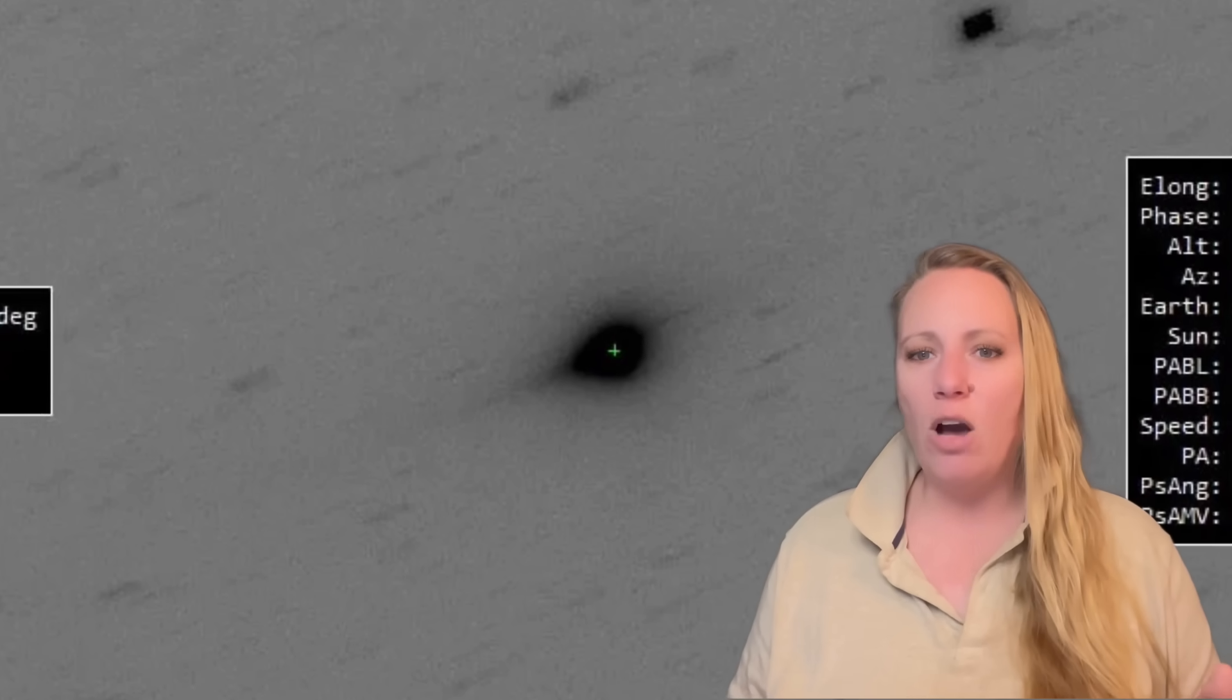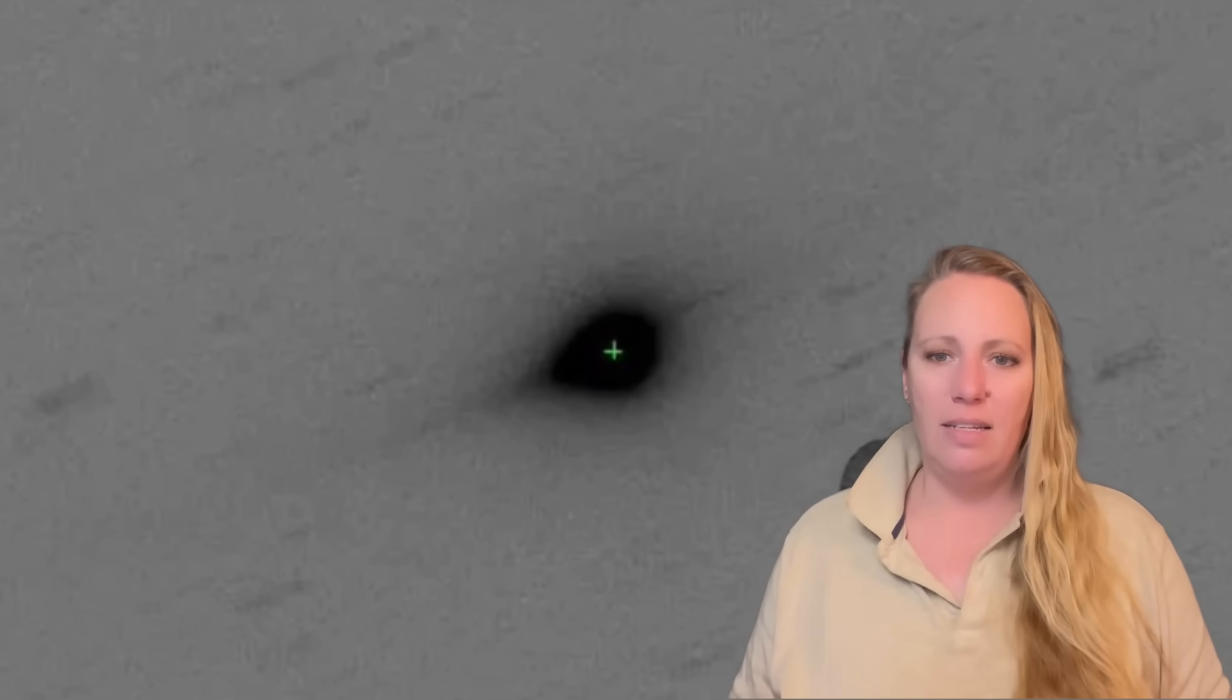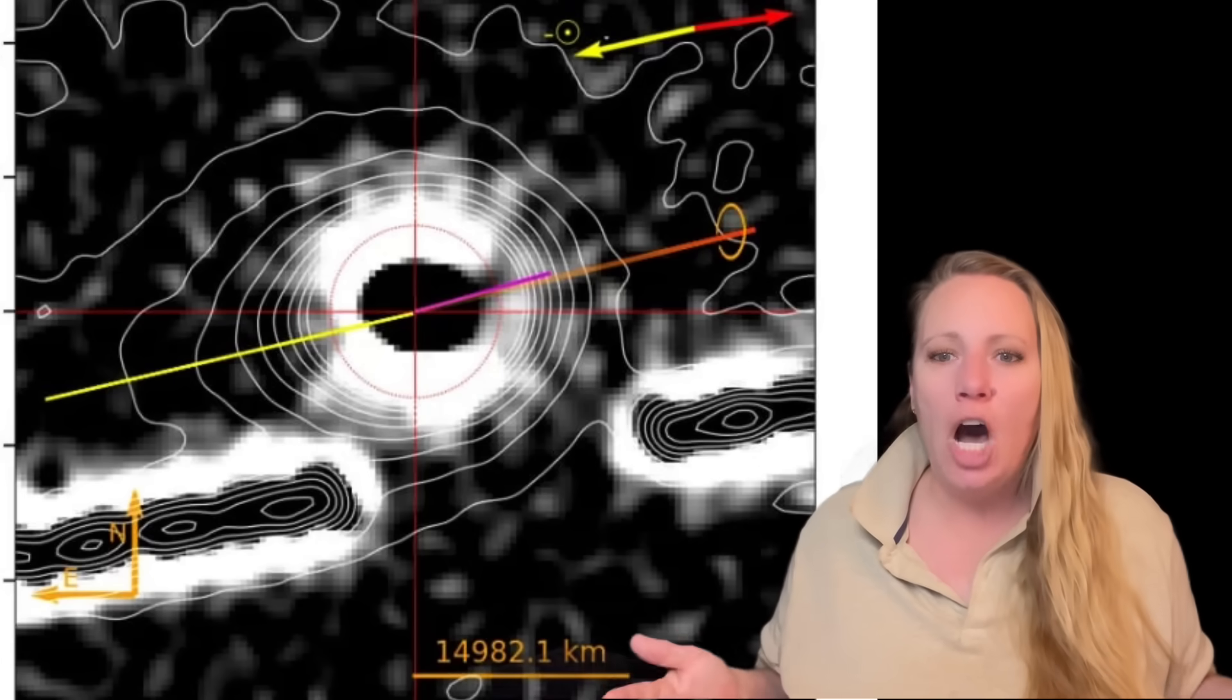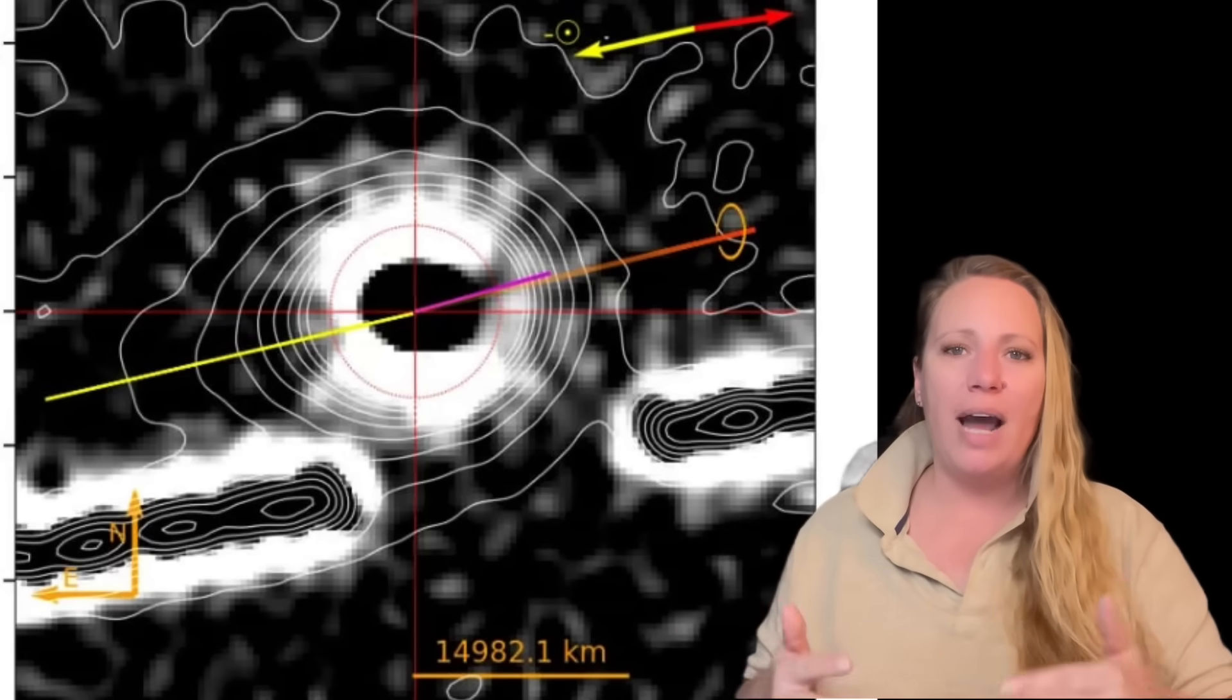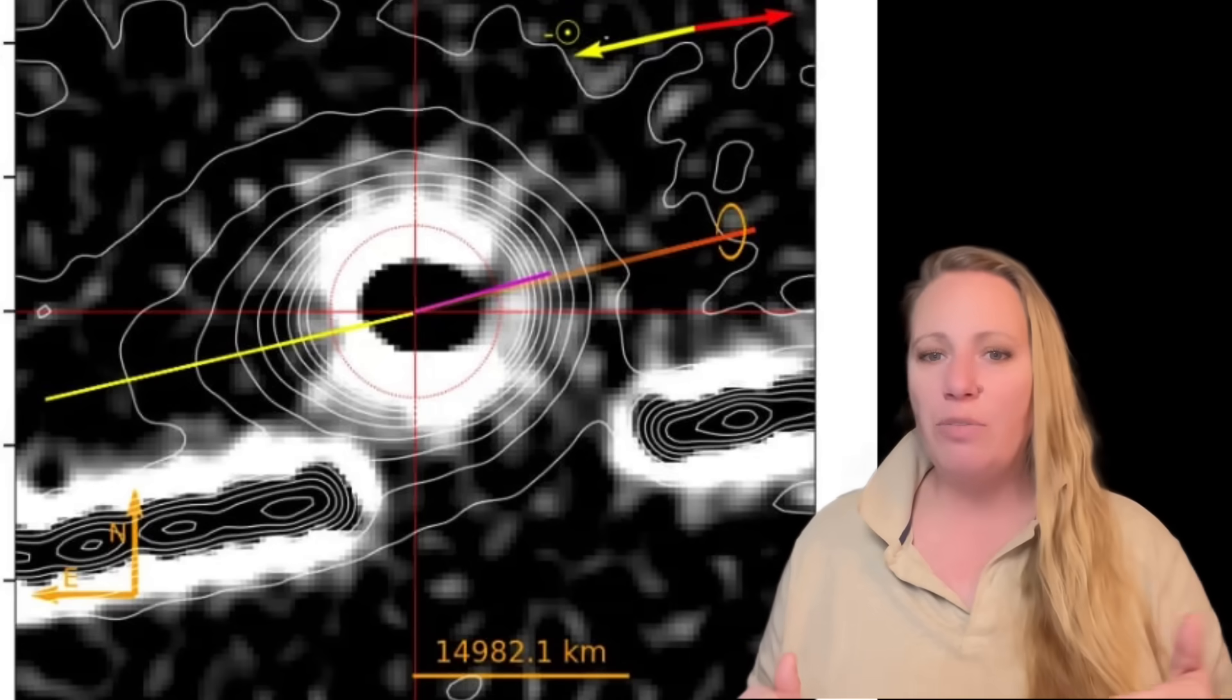Number 12, nickel detected without iron. Number 13, lack of expected carbon-based volatiles. Number 14, jet behavior absolutely not explained by water-ice sublimation. Something else is causing this.